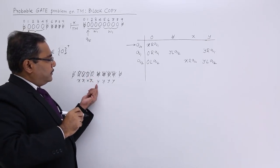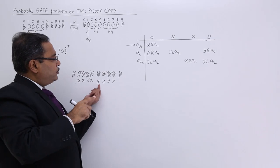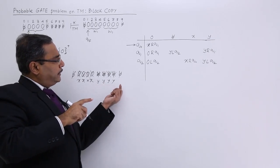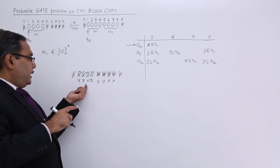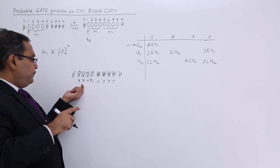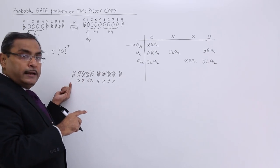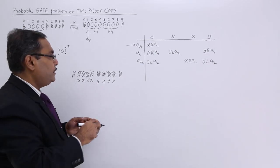In that case, it will move here, then it will come at the end to the blank. Then it will retrace back making all of them 0s and then after getting this blank, it will go to the final state. Let me do it.